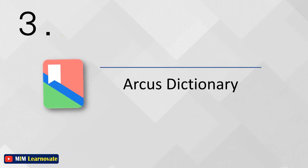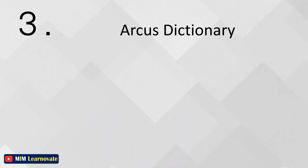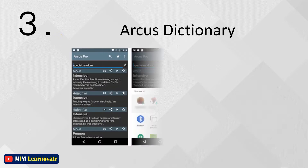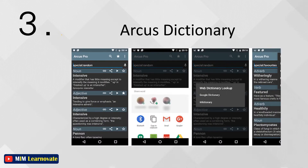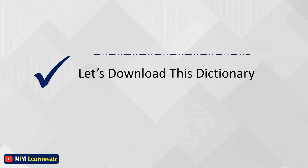The third app is Arcus Dictionary. Arcus Dictionary is a fast offline English dictionary with over 16,500 words, definitions, and synonyms. A 6.2 megabyte download gives you access to everything without requiring network access after install.